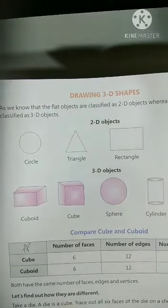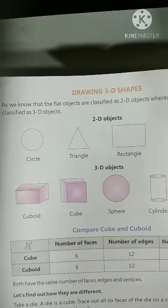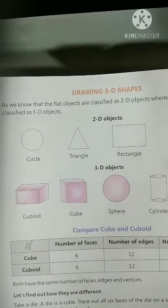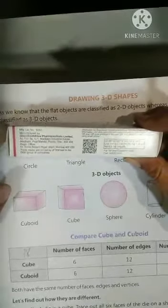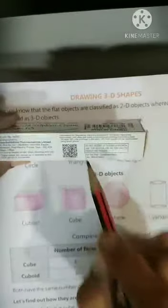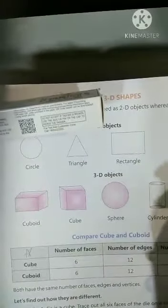First of all, I will show you one object of cuboid. See, here I have a box of ointment, this is made up of, can you see, this is made up of rectangle, yes, and it has a length, breadth along with that depth, thickness. Thickness is there, that is why these objects are called 3D objects.